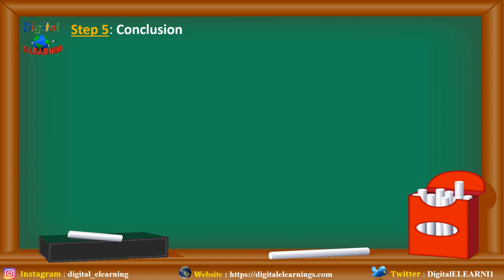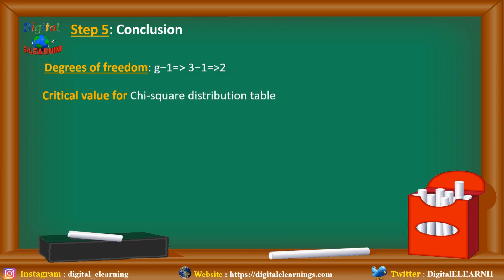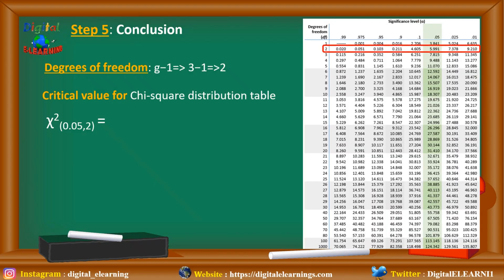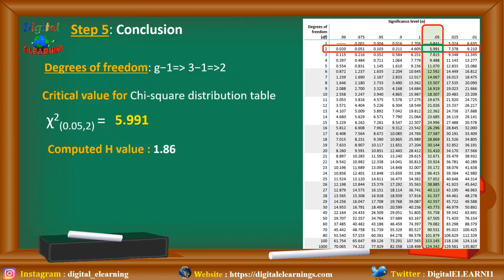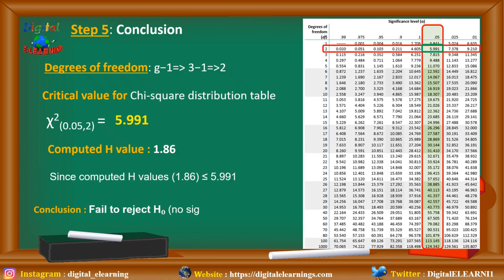For the conclusion, we calculate the degrees of freedom: g − 1 = 3 − 1 = 2. Using the chi-square distribution table at a 5% level of significance with 2 degrees of freedom, the critical value is 5.991. Since our computed H statistic of 1.86 is less than the critical value of 5.991, we fail to reject the null hypothesis — meaning there is no significant difference in median knee pain ratings among the three drugs.